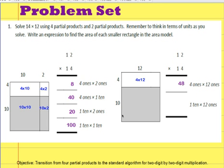Now I'm going to figure out this area: 10 times 12. 10 times 12 is 120, so I'm going to put that here: 1 ten times 12 ones is 120, or 12 tens.